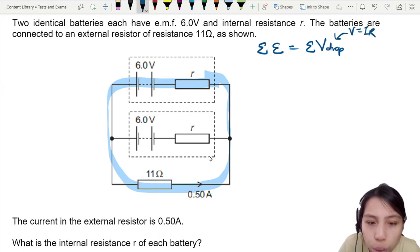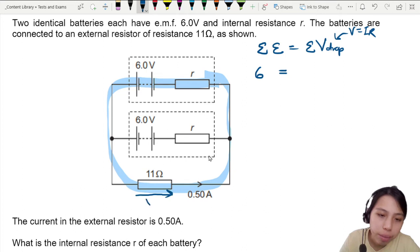If I draw this blue loop, there is only one battery, so that is going to be my 6 volts. Then for potential drop, there's going to be a first drop down here. So that will be the current, 0.5, times the resistance, 11. Is there any other potential drop? Yes, there is one more.